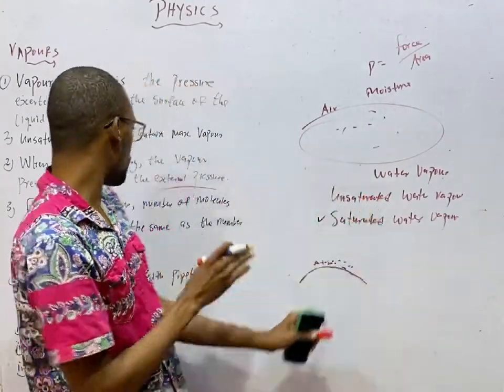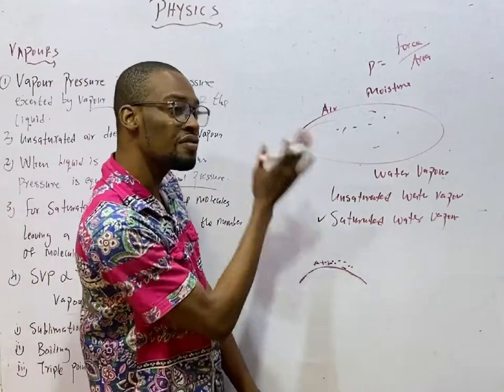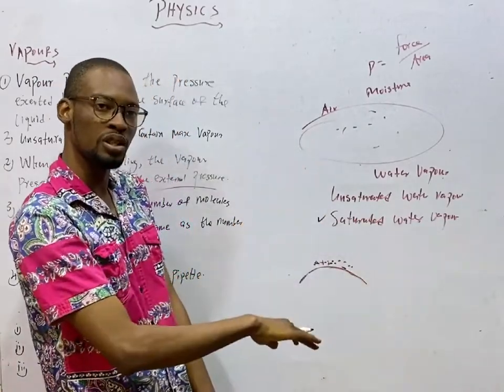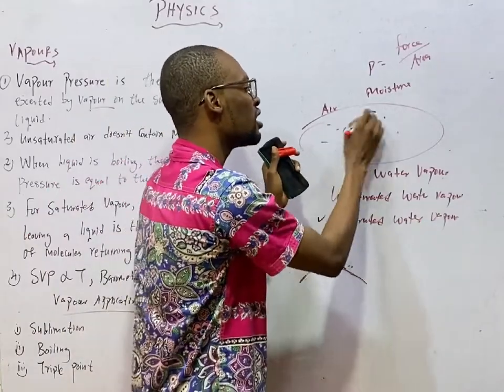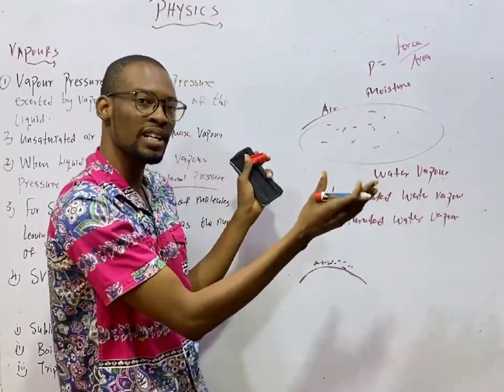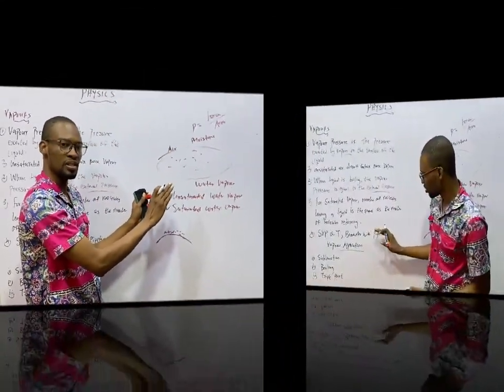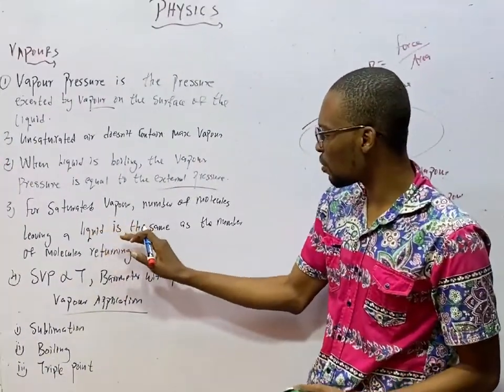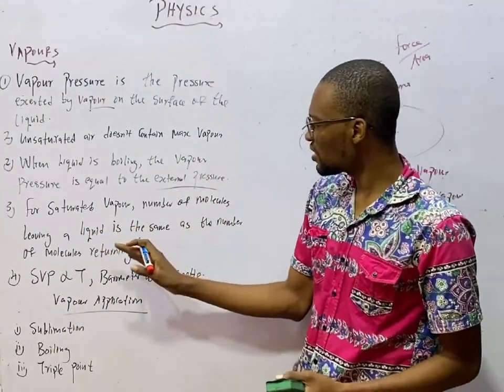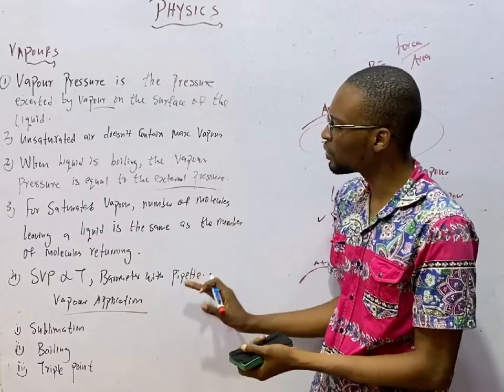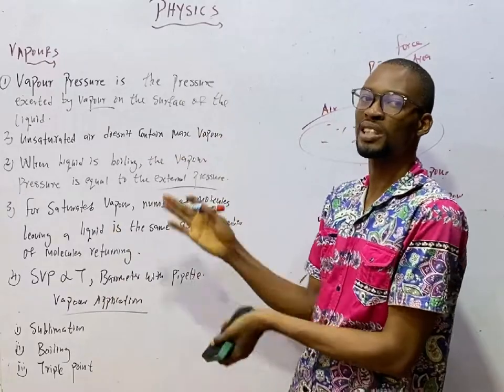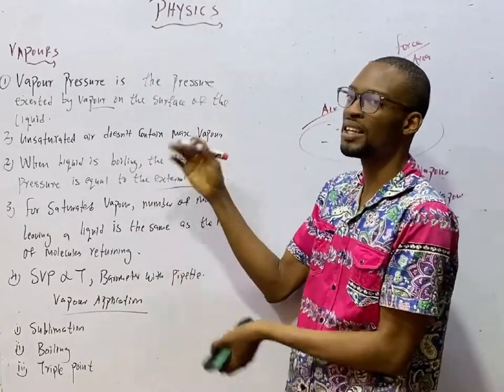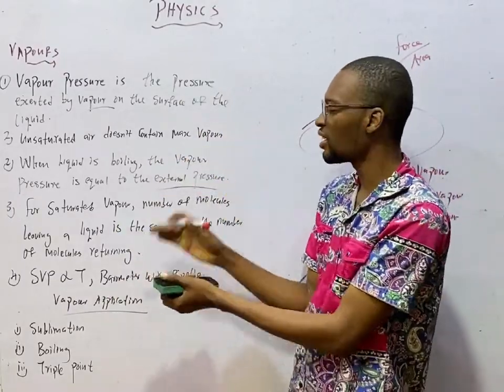Because it is saturated, it has gotten enough that it wants. But for unsaturated vapor, the number of molecules leaving are more than the ones returning, because more molecules are leaving to occupy the dry air. By the time the air is now saturated, then it is saturated vapor. For saturated vapor, the number of molecules leaving a liquid is the same as the number of molecules returning. But when it is not yet saturated, the molecules leaving are more than the ones returning, because more molecules are leaving to occupy the dry air.